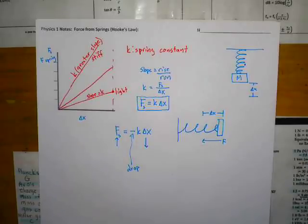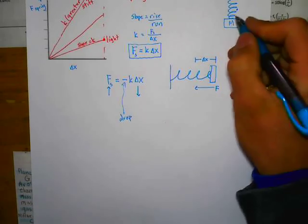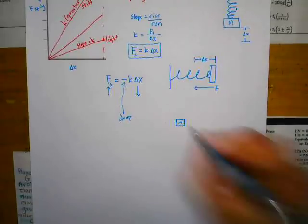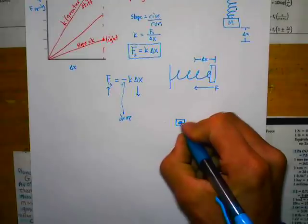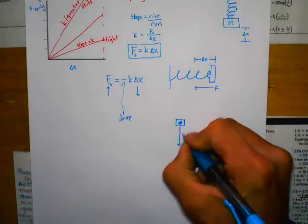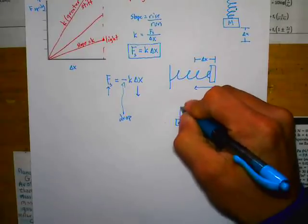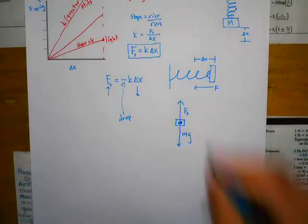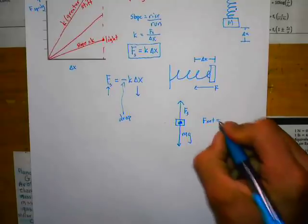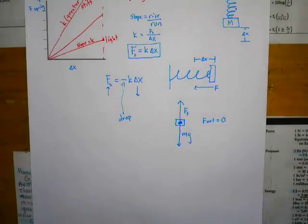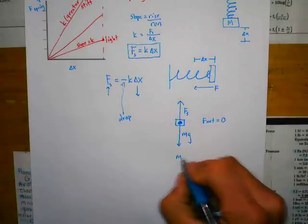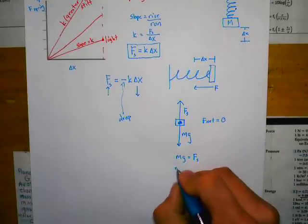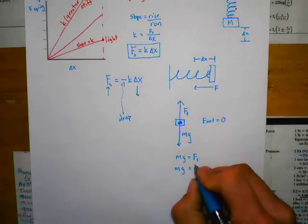This spring force can now be included on all our free body diagrams. For example, for a mass hanging on a vertical spring — it stretches, we put a dot for the center of mass — the FBD would simply be mg downward and Fs upward. If it's in static equilibrium, Fnet equals zero, so mg equals Fs, which gives us mg equals K delta x.